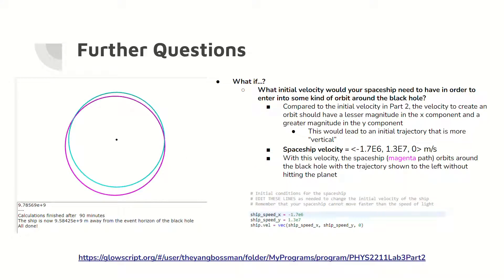To test the what-if question, the initial velocity of the spaceship should be less in magnitude in the x direction and greater in magnitude in the y direction. This new initial velocity would allow for the spaceship to orbit around the black hole. This new velocity after trial and error equals negative 1.7 times 10 to the 6, 1.3 times 10 to the 7, 0 meters per second, and orbits around the black hole after 90 minutes.